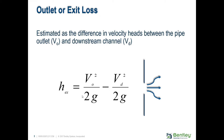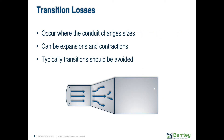The outlet loss is the difference in velocity heads between the pipe outlet and the downstream channel — that's basically the concept of outlet or exit losses. You could also have transition losses. If you have a conduit that either gets bigger or smaller, most of the time as it goes downstream you want it to get bigger. Whenever a transition happens, you have to come up with a K value to correctly account for those losses.